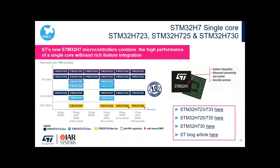Regarding the portfolio, this product series is offered in a wide range of packages. We start with a very small 68-pin QFN package for the 725 and 735 part numbers, going all the way to a 176-pin LQFP or UFBGA package. In between there are multiple variants. We also offer a 115-pin WLCSP package at a very tiny 4mm by 4mm footprint.